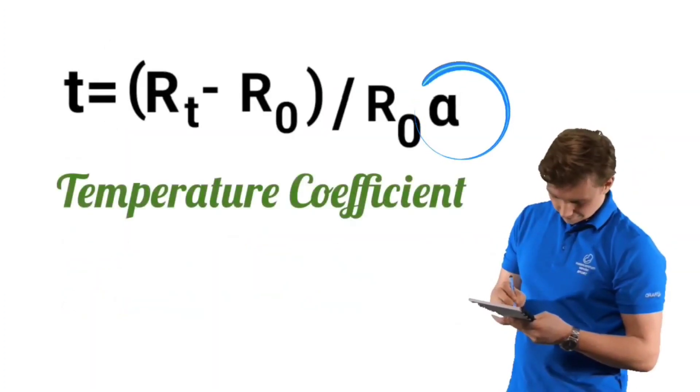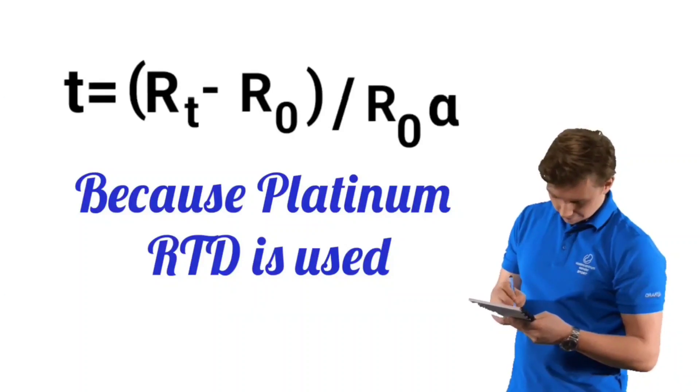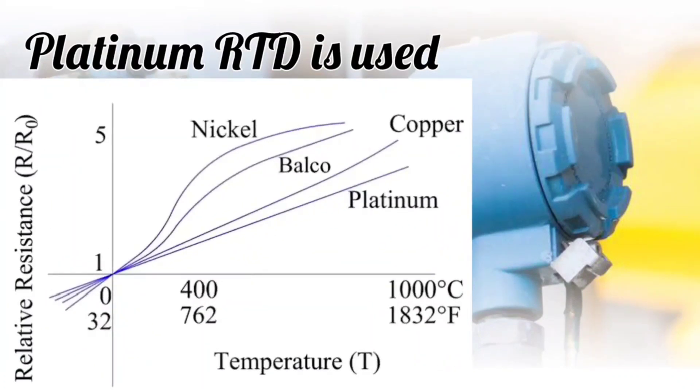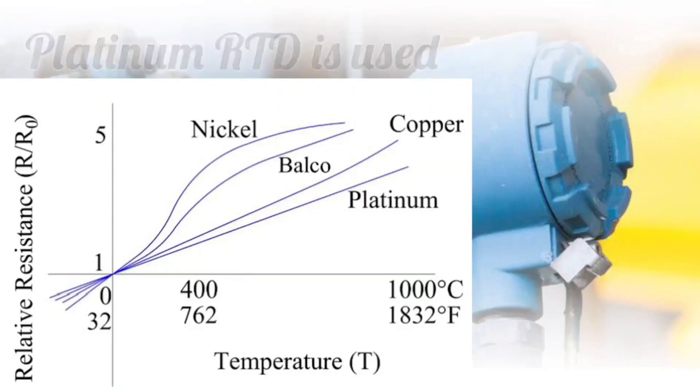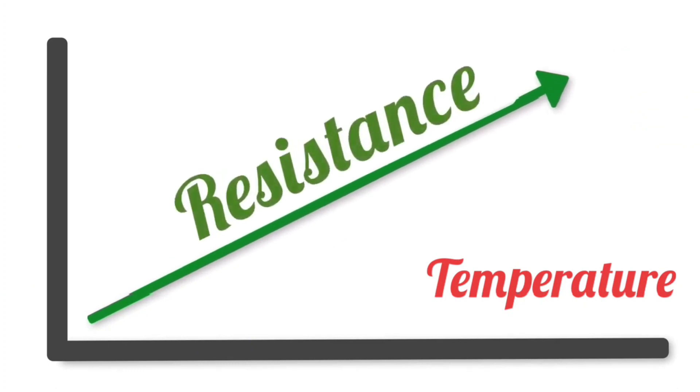Here alpha is the temperature coefficient, whose value is 0.00385 for platinum. Here alpha is taken for platinum because we use mostly the platinum RTD. The platinum RTD is used because the resistance of platinum varies most linearly with temperature as compared to other materials. How does it vary linearly means as the temperature increases, the resistance will also increase accordingly.